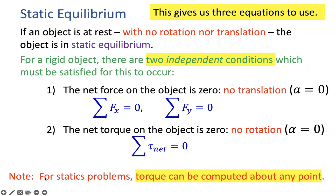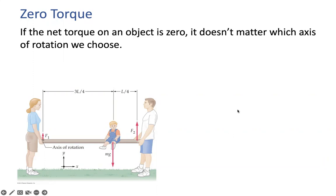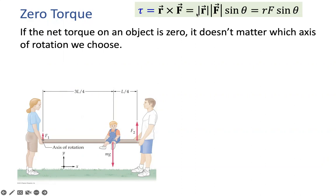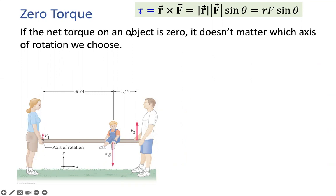For the static equilibrium lab, the torque can be calculated around any point if the object is at equilibrium. You will talk about balancing objects and what forces you need to figure out in the lab activity. Figure out what forces are acting on the system — one force by the hand of this lady, two forces by the hands of this man, and the force of gravity acting on this boy.